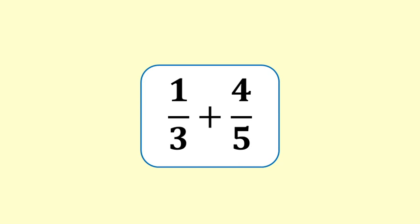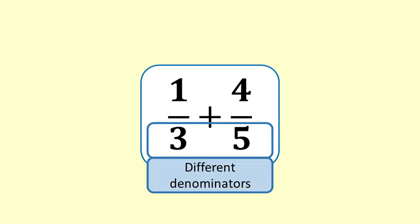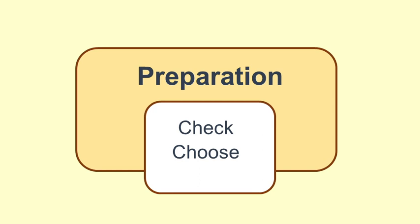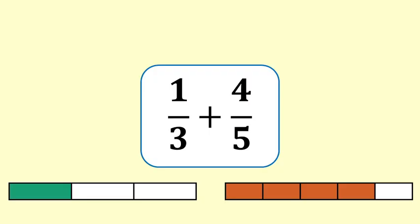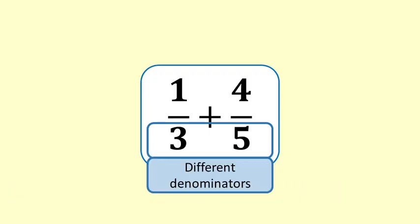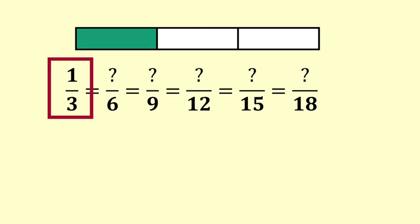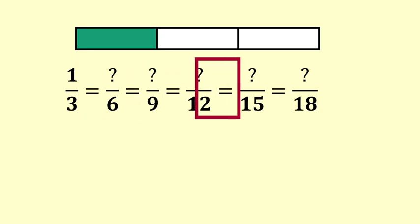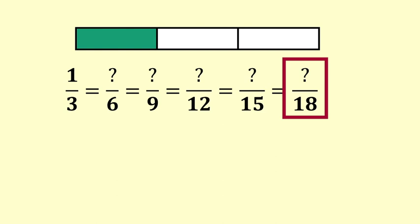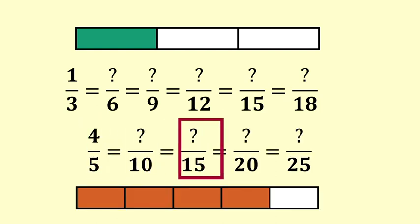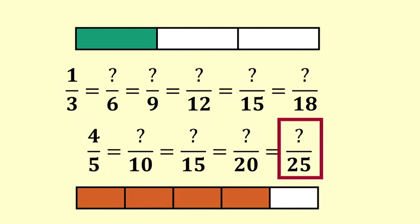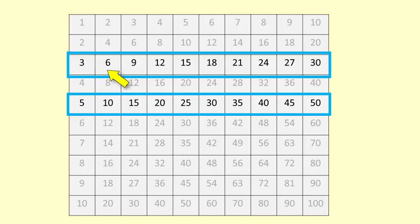1 third plus 4 fifths — the denominators are not the same. We will need to choose a denominator that will work for both fractions. We will work through some examples to show the process. 1 third plus 4 fifths: thirds are compatible with 6ths, 9ths, 12ths, 15ths, 18ths. Fifths are compatible with 10ths, 15ths, 20ths, 25ths, etc. We are just going along the times tables.